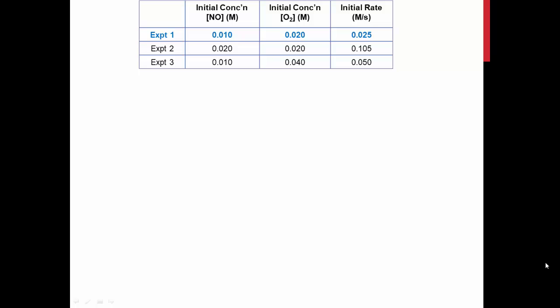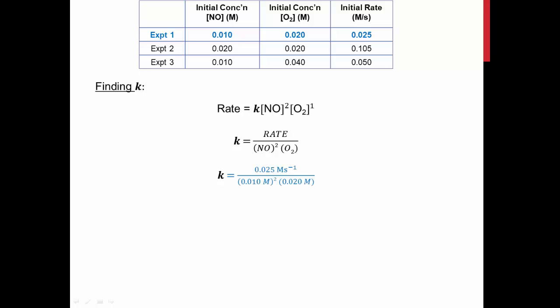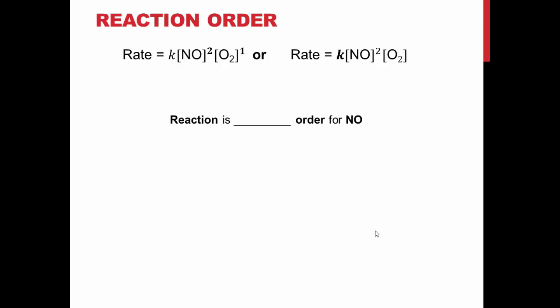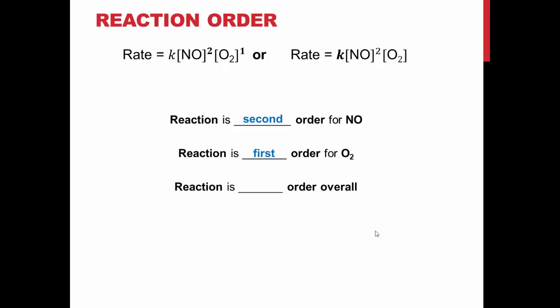Now that we know our orders of reactants, we can determine the rate constant K. We rearrange the equation to isolate K and replace all variables with information from experiment 1 in the table. After canceling units, K equals 12,500 moles per liter to the minus 2, times seconds to the minus 1. We calculate this for each experiment and find an average value of K to use in the rate equation. From all our calculations, the reaction is second order for NO and first order for O₂. Adding these together, 2 plus 1, gives an overall reaction order of three.